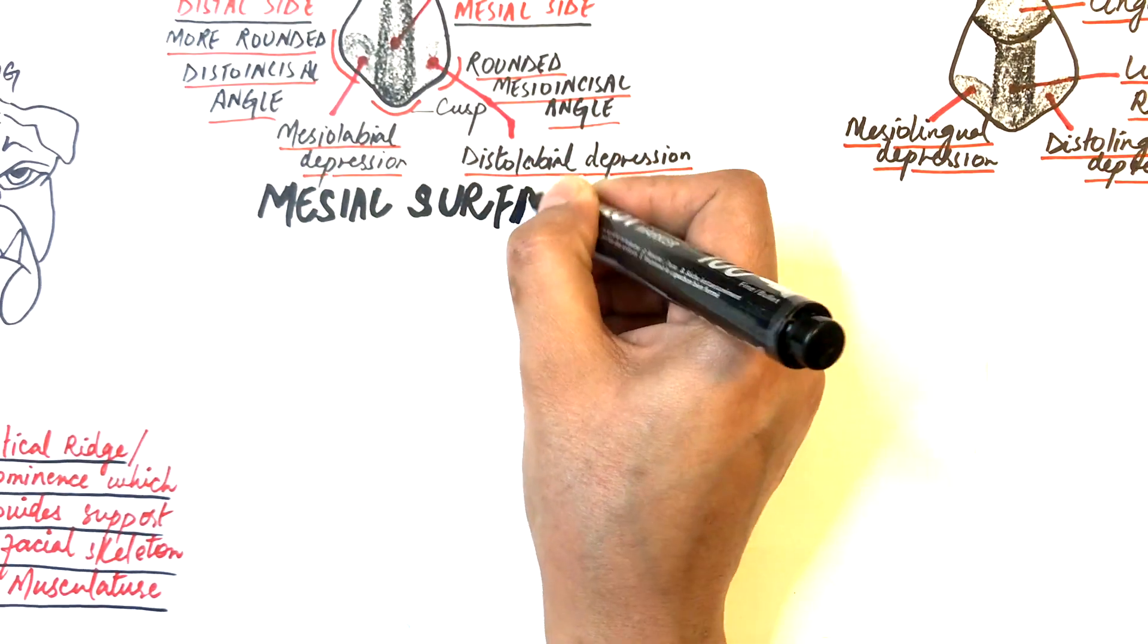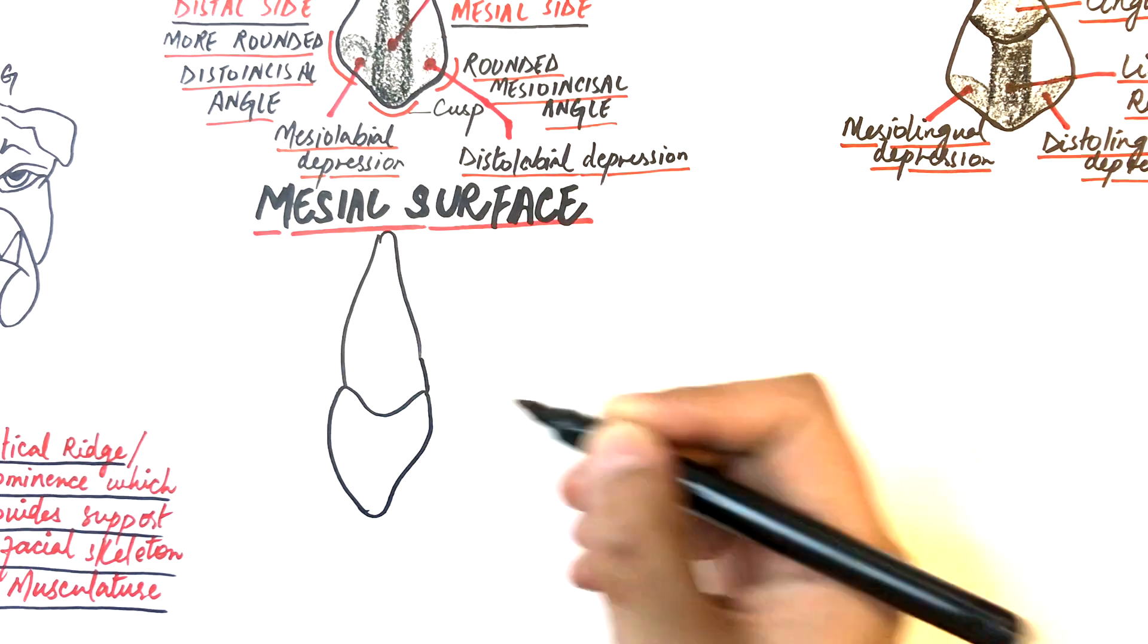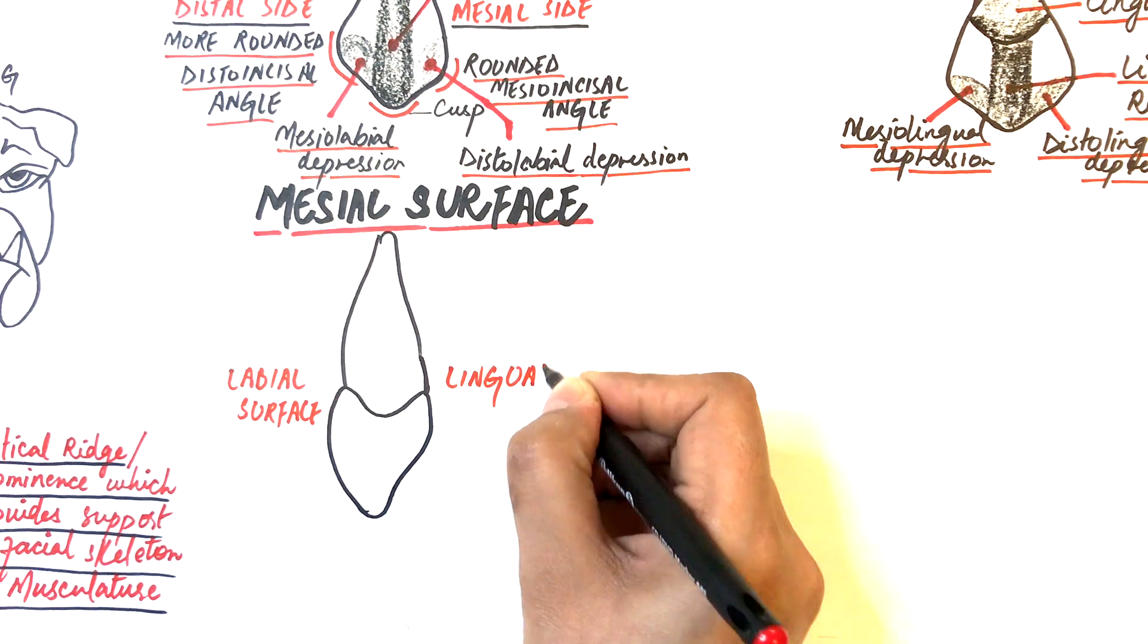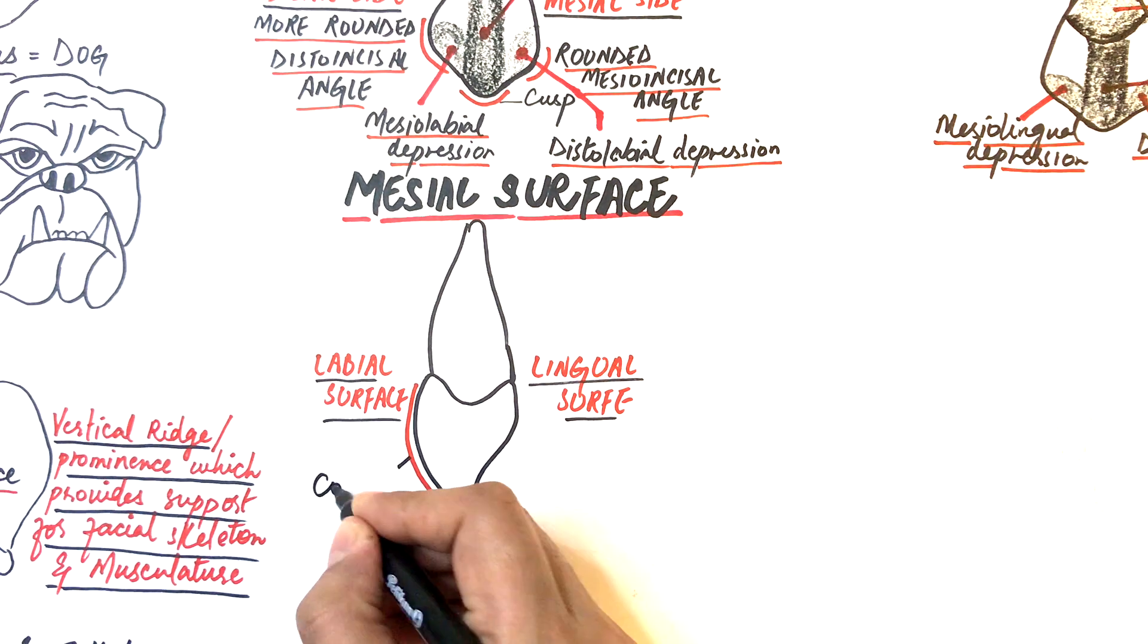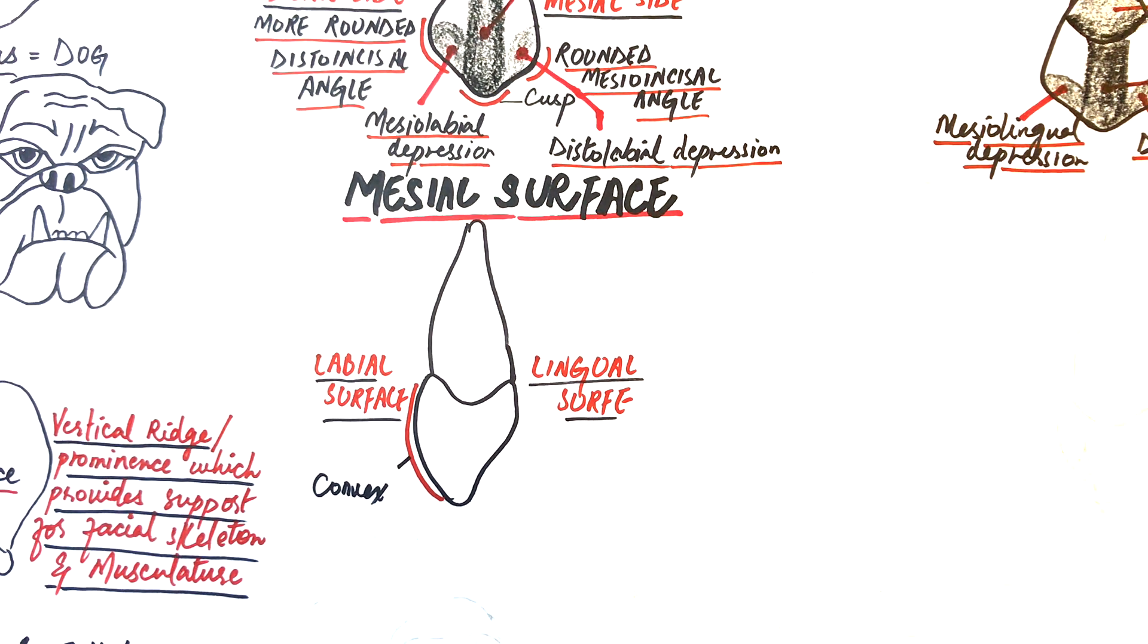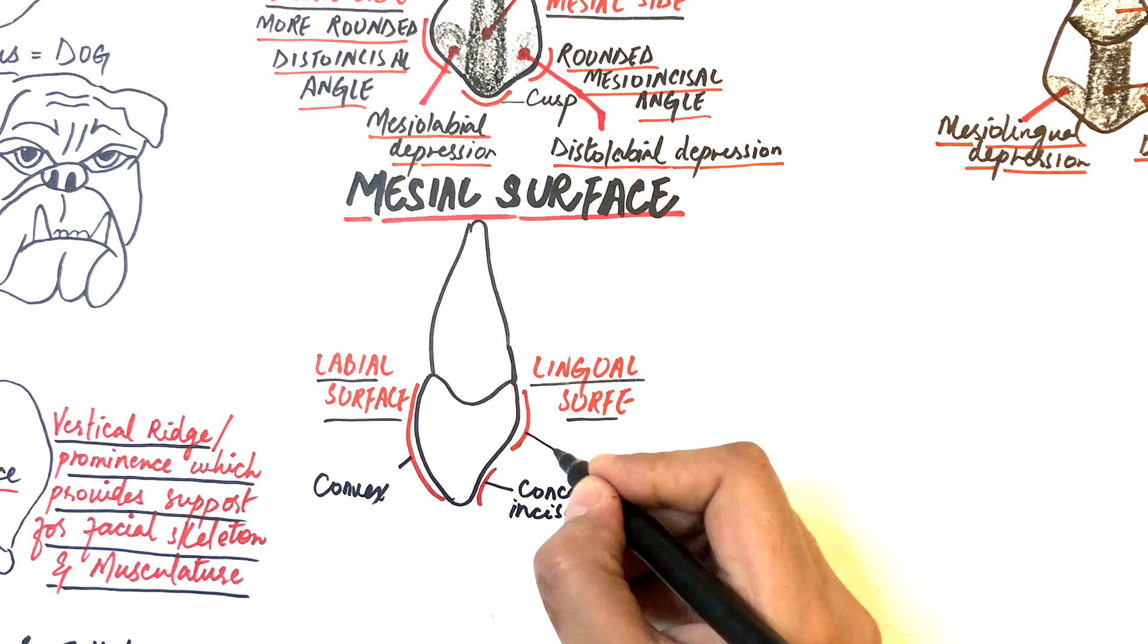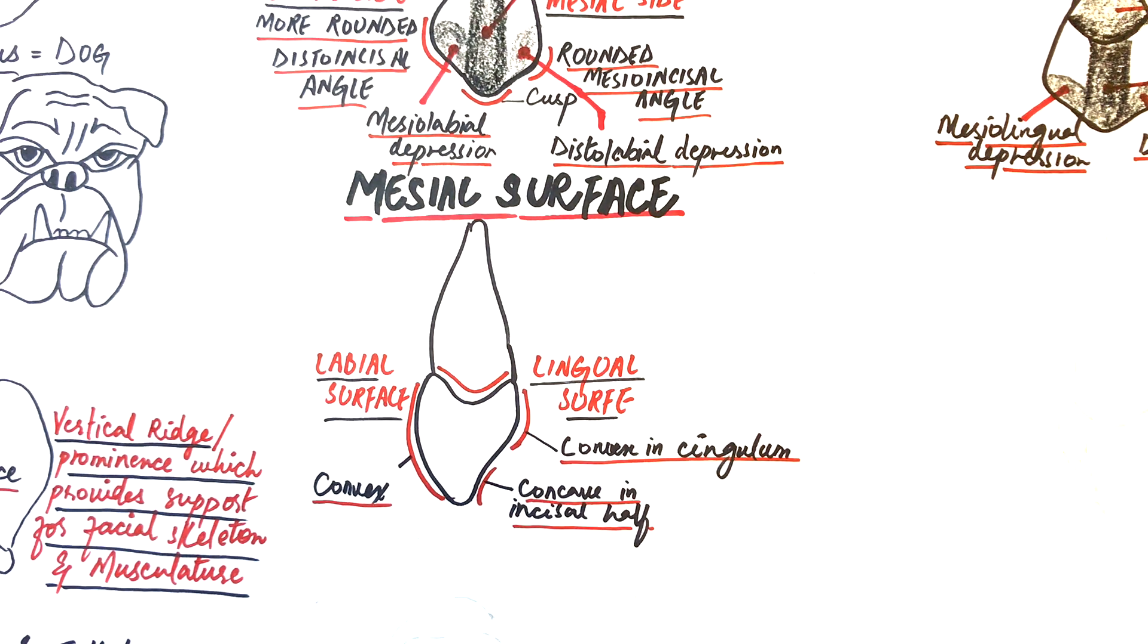From the mesial surface, the tooth is wider labiolingually and just like other anterior teeth it is triangular in shape. The labial outline of this triangle is convex and the lingual outline is concave in the incisal half and then convex in the cingulum area. The cervical line is curved evenly towards the incisal edge.